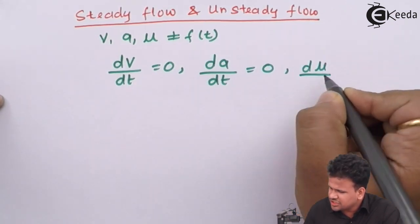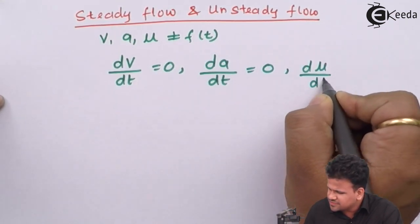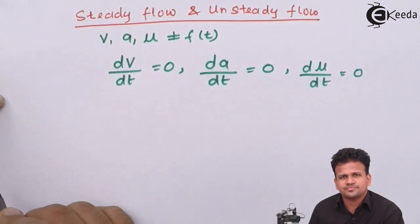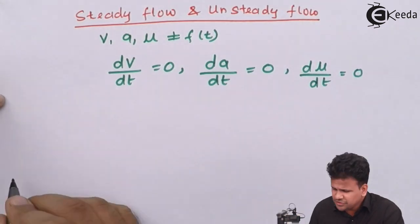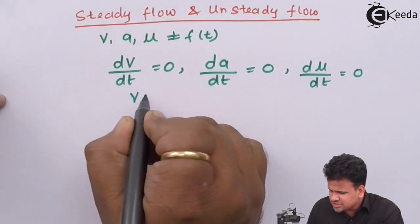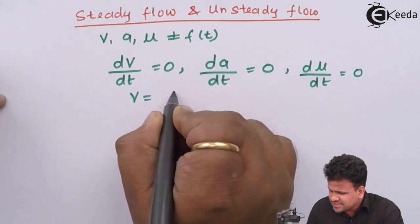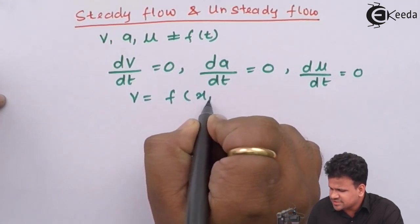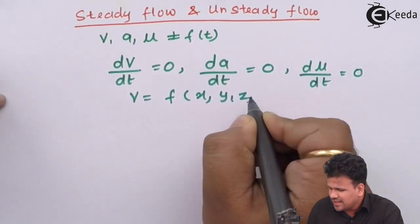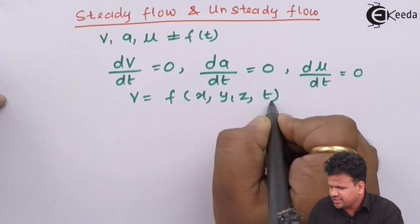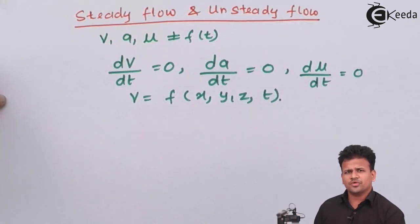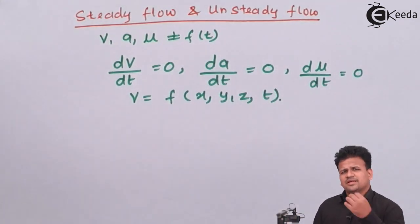Now we know that velocity is a function of x, y, z, and t. It is dependent upon four variables — three spatial coordinates and one time coordinate.